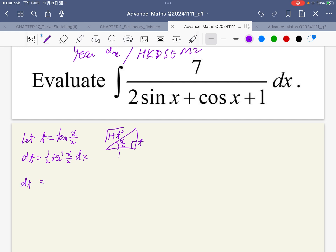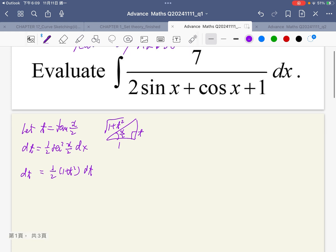For dt, dt equals 1 over 2 times secant squared. Secant is 1 over cosine, so it should be square root of 1 plus t squared. Rearranging, dx equals 2 over 1 plus t squared dt.